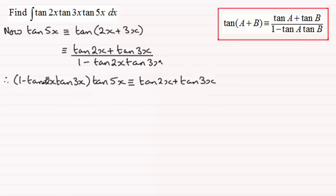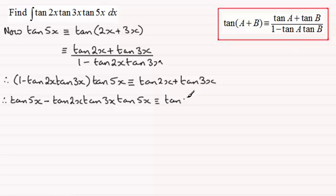So expanding this bracket out here gives me tan 5x. And then we start to create the term in the integral, tan 2x, tan 3x, tan 5x. And then on the right hand side here, we've got the two terms, tan 2x plus tan 3x.